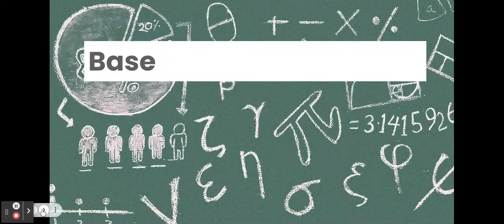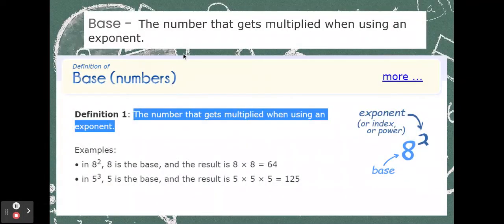Base number. Well, we just looked at a base number. A base number is the number that gets multiplied when using an exponent. So, here's our diagram again. We've got our base number 8. We've got our exponent, or power, 8 to the second power. So, we know we're going to multiply 8 twice. Use that number twice. 8 times 8. We've got it 2 times. So, our base number is 8. It's the number we are actually going to be multiplying.